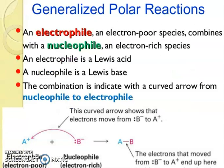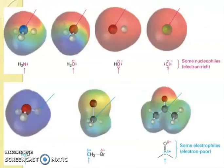So generalized polar reactions. An electrophile, an electron-poor species, combines with nucleophile, an electron-rich species. An electrophile is a Lewis acid and nucleophile is a Lewis base. The combination is indicated with curved arrow from nucleophile to electrophile. And this curved arrow shows that electrons move from B minus to A plus. The electrons that move from B minus to A plus end up here in this new covalent bond. So electrophile is electron-poor and nucleophile is electron-rich.